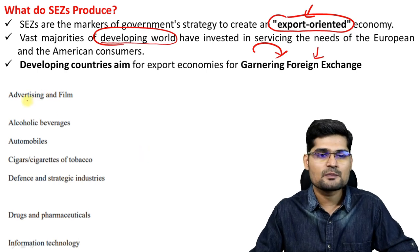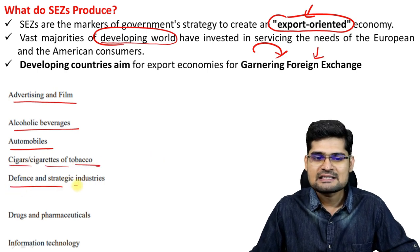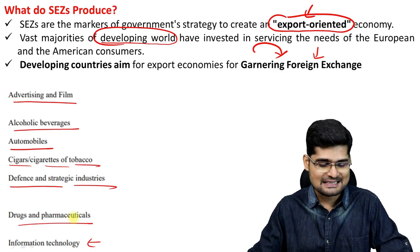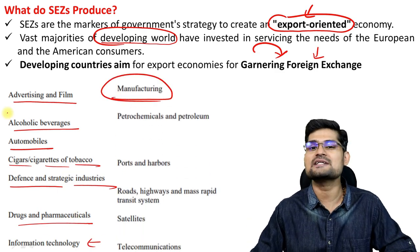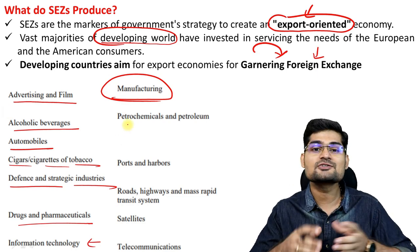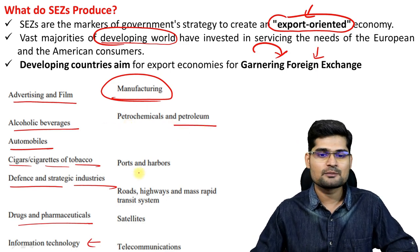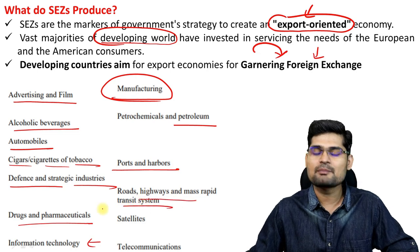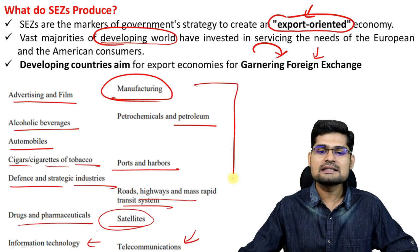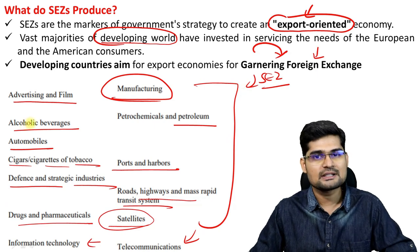Some of the goods observed include advertising and film, alcoholic beverages, automobiles, cigarettes and tobacco, defense and strategic industries, drugs and pharmaceuticals, information technology, and many others. Manufacturing hubs in SEZs — most electronic items, with China leading in the world — petrochemicals and petroleum products, ports and harbors, roads, highways and mass rapid transit systems, satellite and telecommunication systems are all linked to SEZs in different portions of the world.